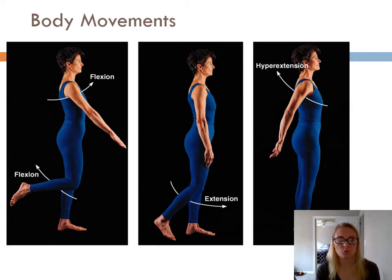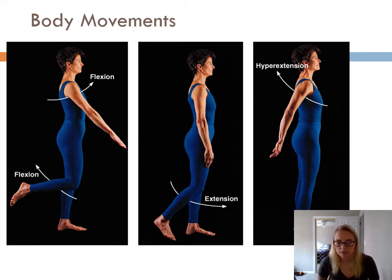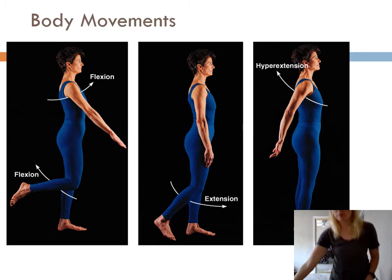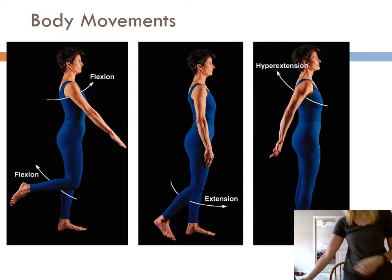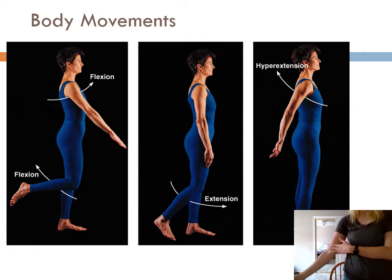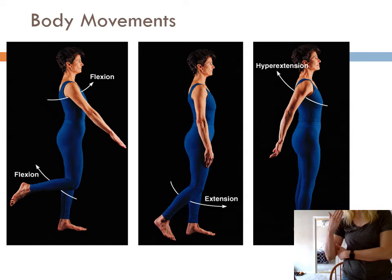The first set of movements are called flexion and extension. When talking about flexion, it's defined by reducing the angle between two body parts. Using my elbow as an example, if I'm in anatomical position and I bend my arm forward into this frontal plane, this is flexion — I'm decreasing the angle between my arm and my forearm.